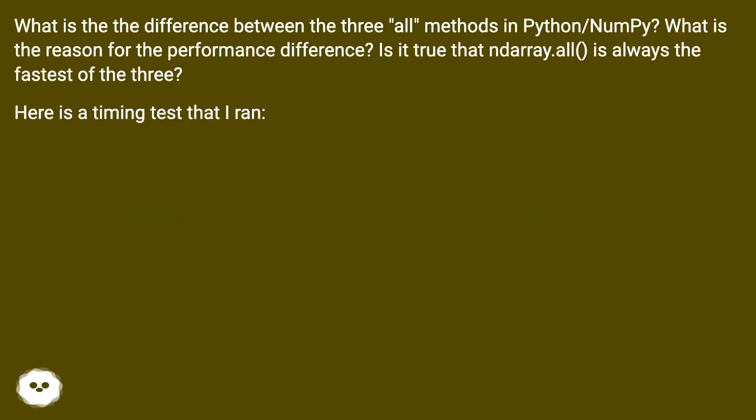What is the difference between the three 'all' methods in Python NumPy? What is the reason for the performance difference? Is it true that ndarray.all is always the fastest of the three?